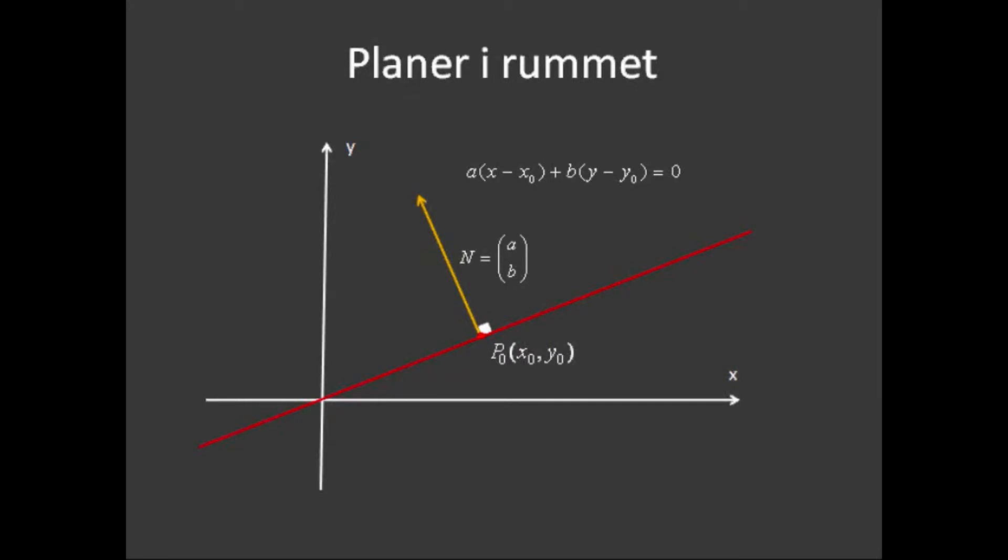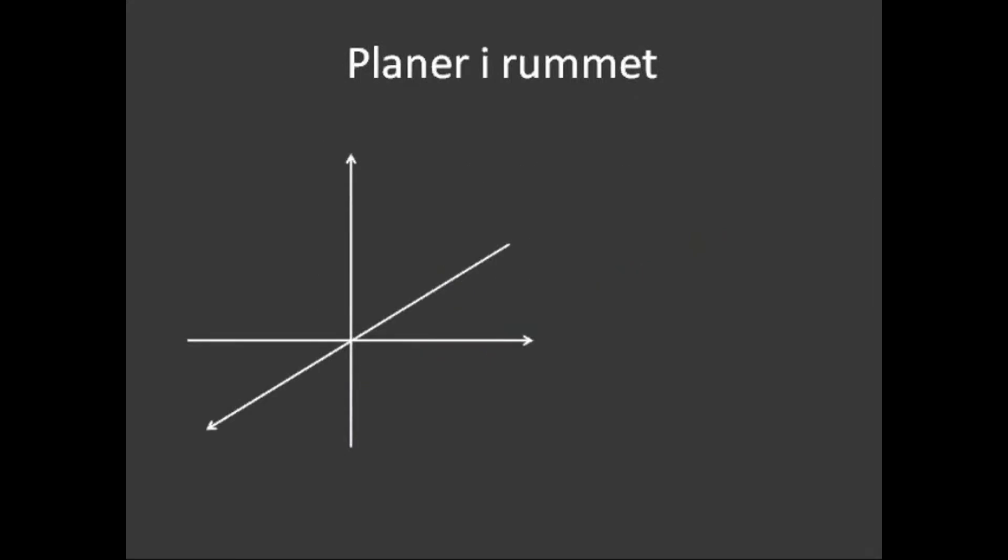Vi så yderligere, at et punkt, der ligger på en røde linje, har koordinaterne, der altså passer ind i linjens ligning. Samme princip gør sig gældende, når man befinder sig i et tredimensionel verden, som vi skal se i denne lektion.